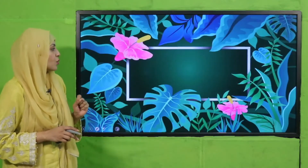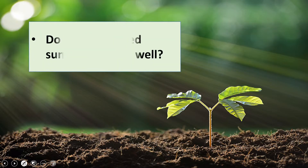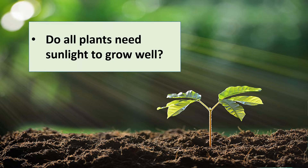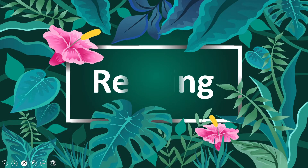My dear students, now is the time for pre-reading questions. Quickly tell me, do all plants need sunlight to grow well? Almost all plants need sunlight to grow well, because plants make their food in the presence of sunlight. Ye hamne padha tha ki leaves mein sunlight ki wajah se food prepare hota hai.